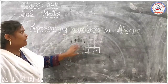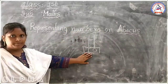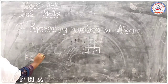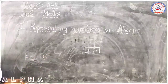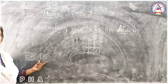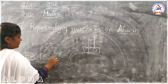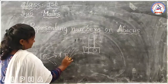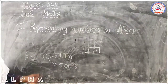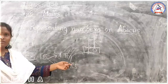Okay children, listen. Let's see how we can represent numbers on Abacus. For example, see here — what is this number? Fifteen. See here, what is this number? Fifteen. First, observe the given number. In fifteen, you have one ten and five ones.